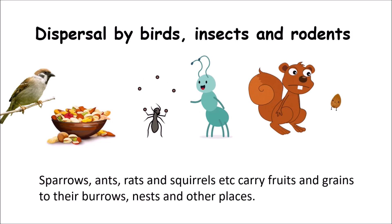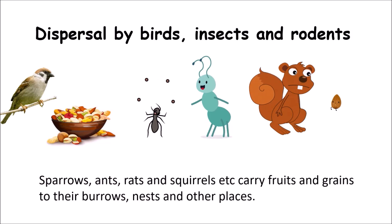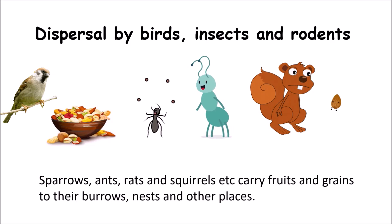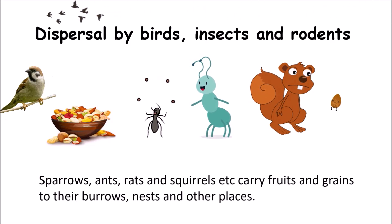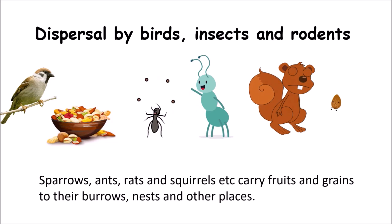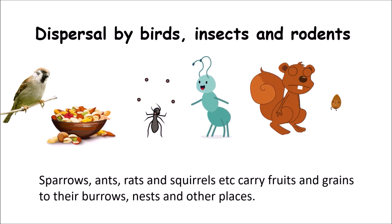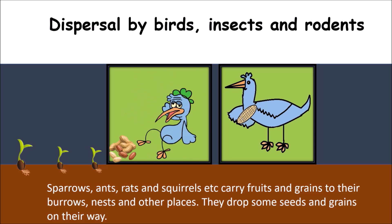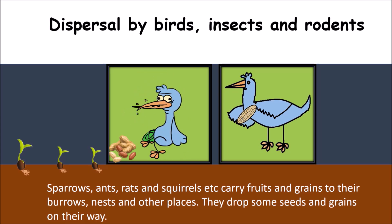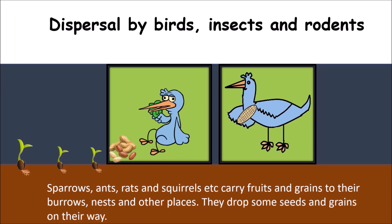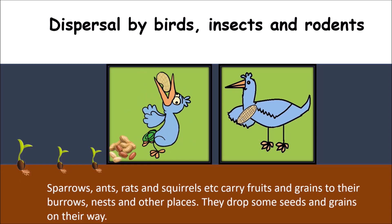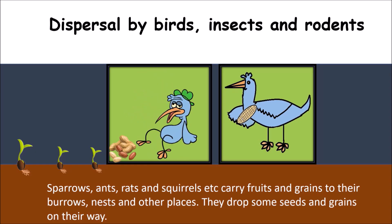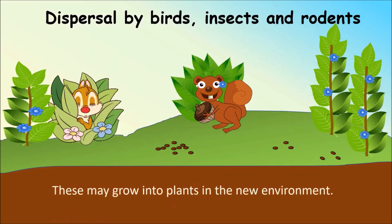Dispersal by birds, insects and rodents: Sparrows, ants, rats, squirrels and many others carry fruits and grains to their burrows, nests and other places. They drop some grains or seeds on their way, and these may grow into plants in the new environment.